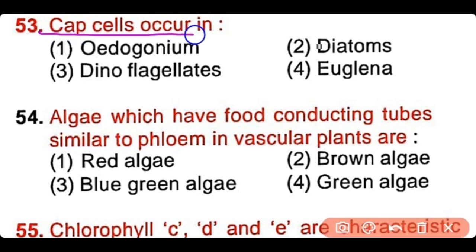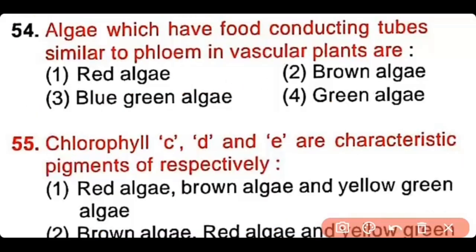Question number 53: Cap cells occur in Oedogonium, diatoms, dinoflagellates, or Euglena? The correct answer is option 1. Oedogonium has cap cells.